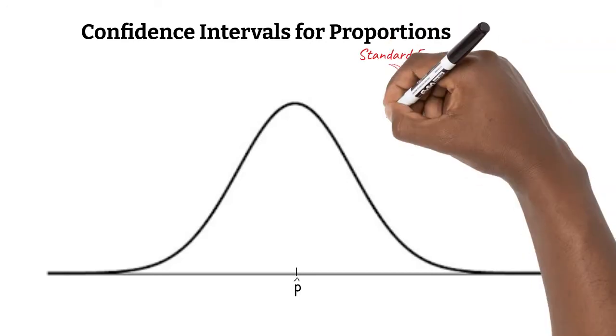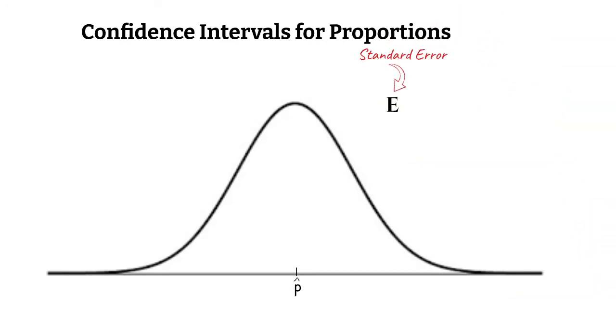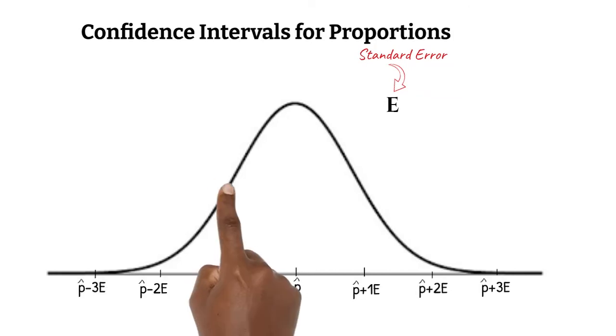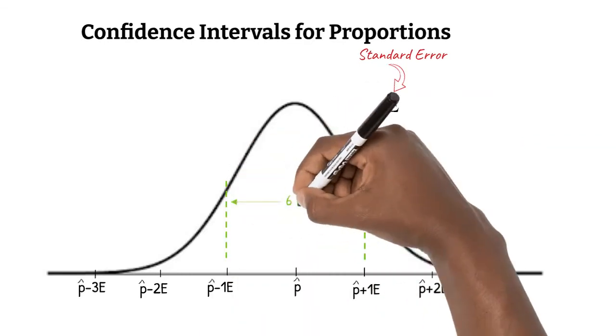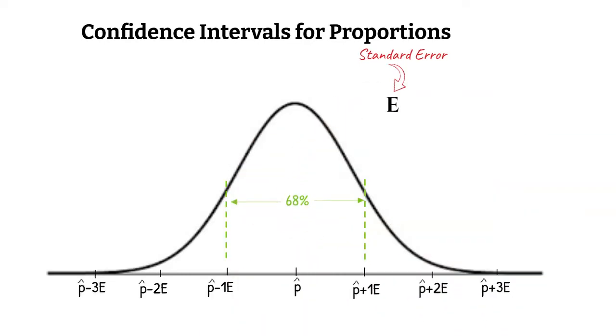The symbol for standard error is an uppercase E. We don't have to survey several samples. We can be confident that 68% of our proportions are between 1 standard error below and 1 standard error above our sample proportion. 95% of proportions are between 2 standard errors below and 2 standard errors above our sample proportion.